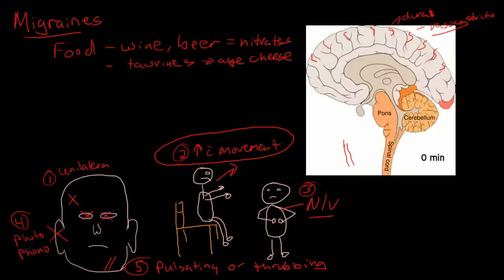So theory number one is the theory of vasoconstriction and vasodilation, and I think this is kind of out of favor now, although not completely. Vasoconstriction and vasodilation may still play a role, and it's actually vasodilation that causes the pain. The vasoconstriction is the first step, but the pain occurs when there's vasodilation.